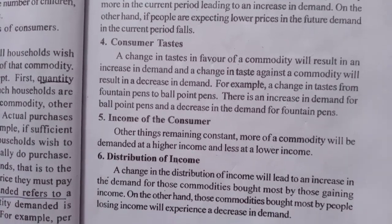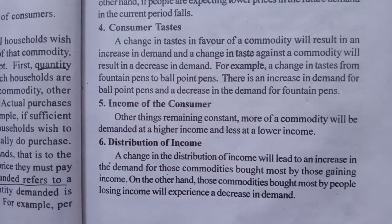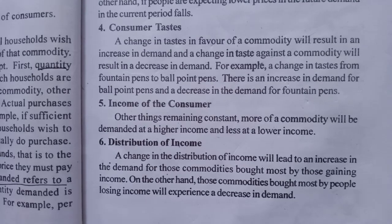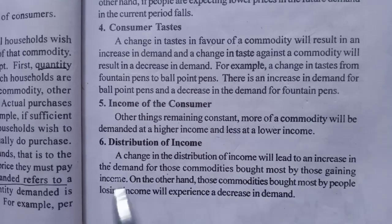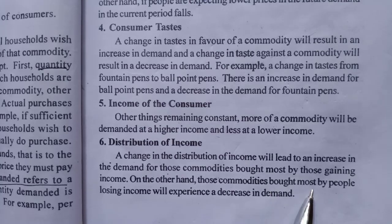The sixth determinant is distribution of income. A redistribution of income that shifts income toward higher spenders will lead to an increase in demand for those commodities bought most by those gaining income, while those commodities bought most by people losing income will experience a decrease in demand.